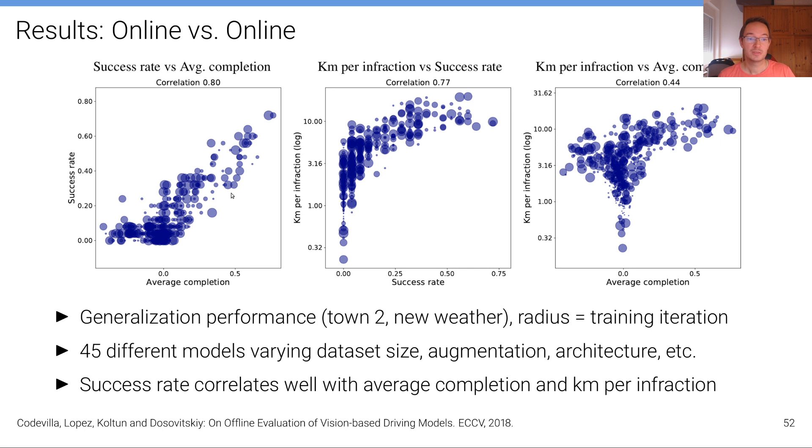What we can see from these plots is that the success rate correlates well with average completion and also with the kilometers per infraction. But somehow kilometers per infraction correlates less well with average completion.